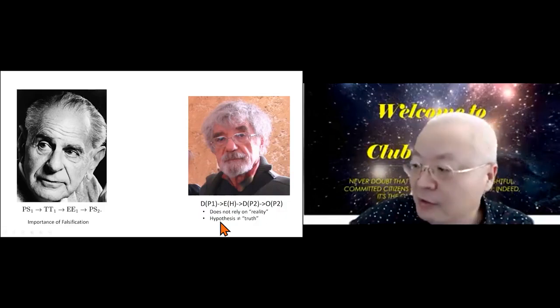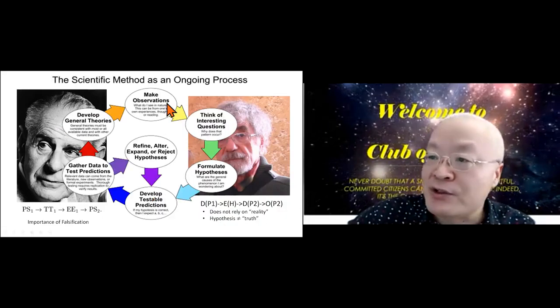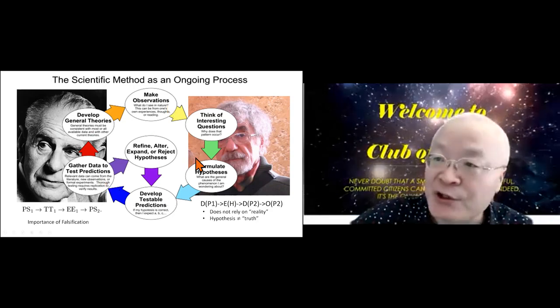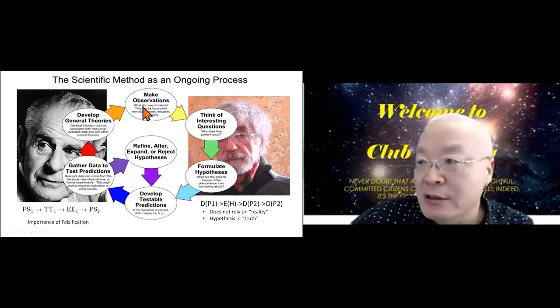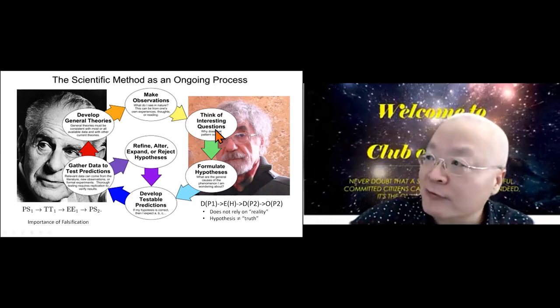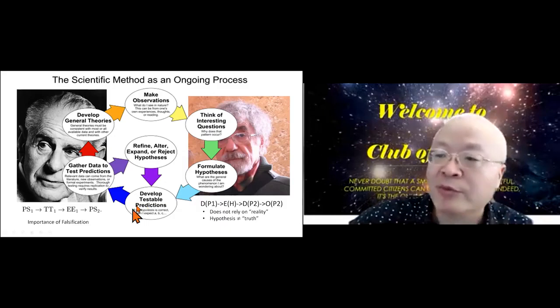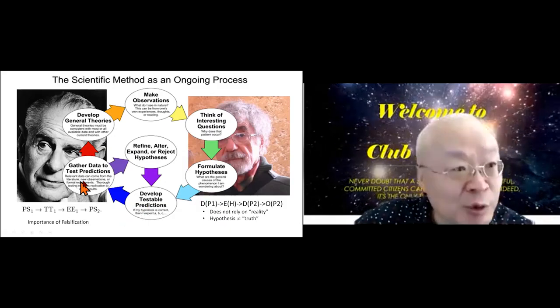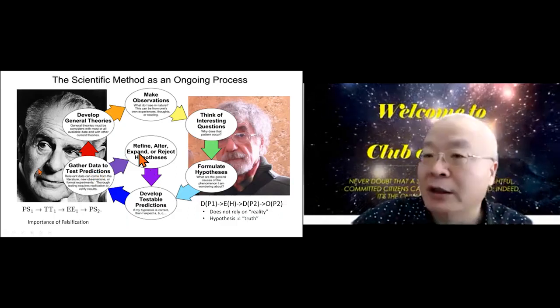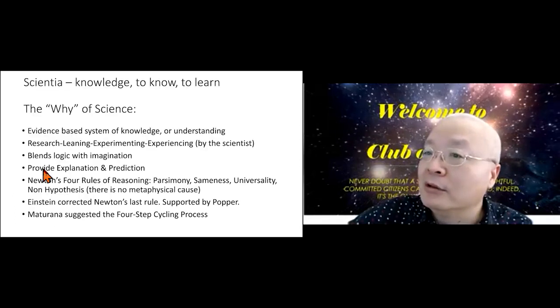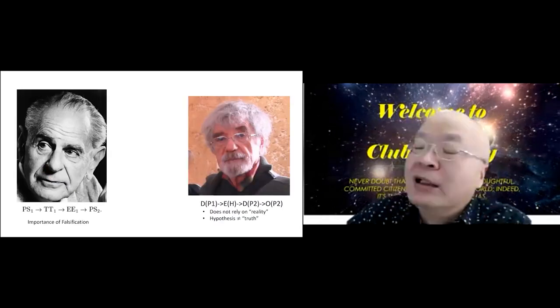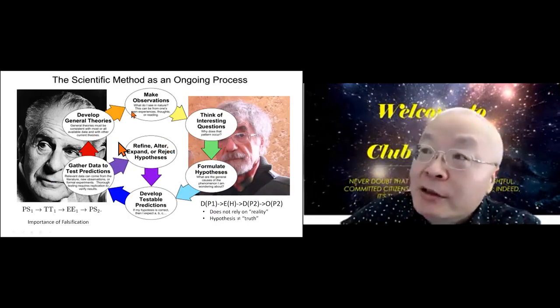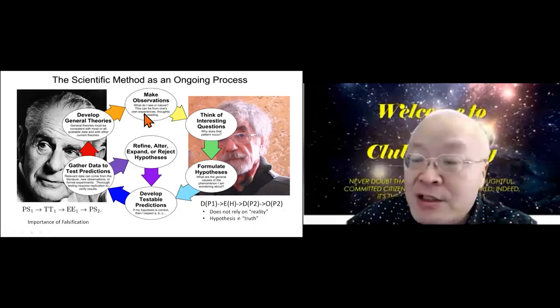Hypothesis is something we all can have. This circle is commonly accepted in more detail, the circle of science. If you Google the image about what is science, you frequently will get this cycle. You make an observation, you think of interesting questions, you formulate your hypothesis, you develop testable predictions, and you gather data to test your predictions. And you can go on and on here to refine. It's a circular process that defines science and it's widely accepted.